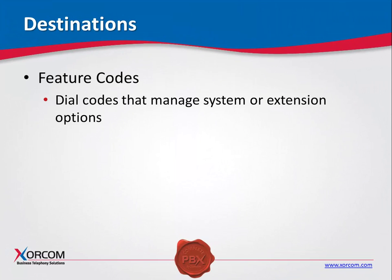Feature codes enable you to activate system or extension options. Examples include star 97, which enables you to check voicemail for the extension, or star 65, which allows you to discover the device's extension number. You can use the feature codes that come standard with the system, or define your own, or modify existing feature codes by assigning a different dial number to them.